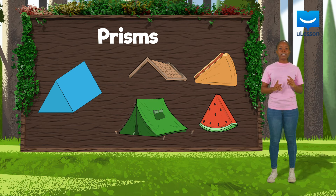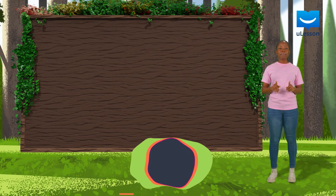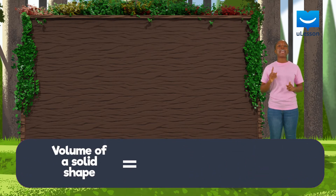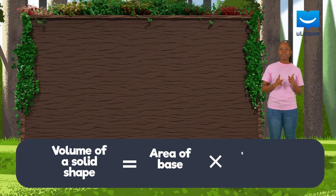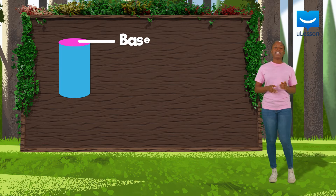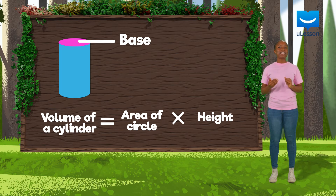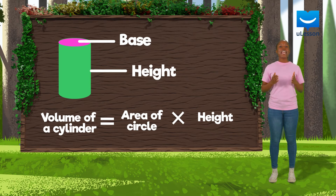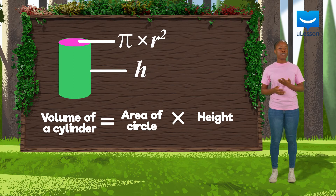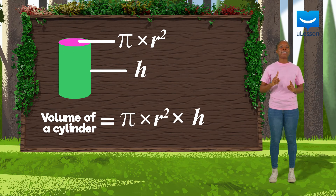Like all other prisms, we can also determine the volume of a cylinder and a triangular prism using their base. Remember that the volume of a solid shape is the area of its base multiplied by its extended length. Since a cylinder has a circular base, its volume will be the area of a circle multiplied by the extended length, which is its height. The area of a circle is pi times radius squared, so the volume is pi times radius squared times height.